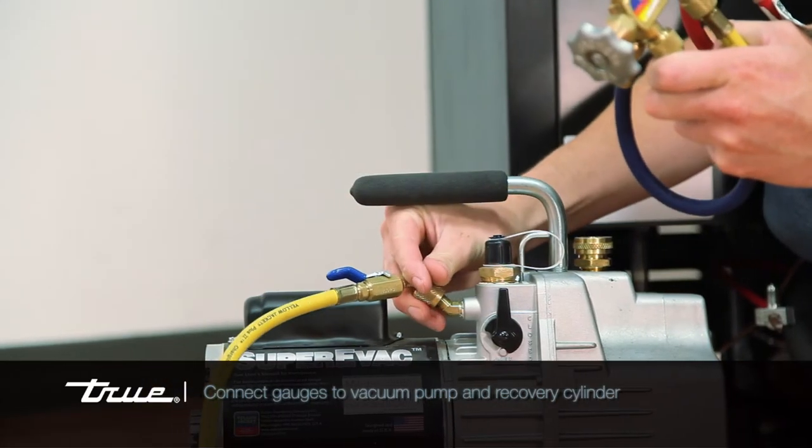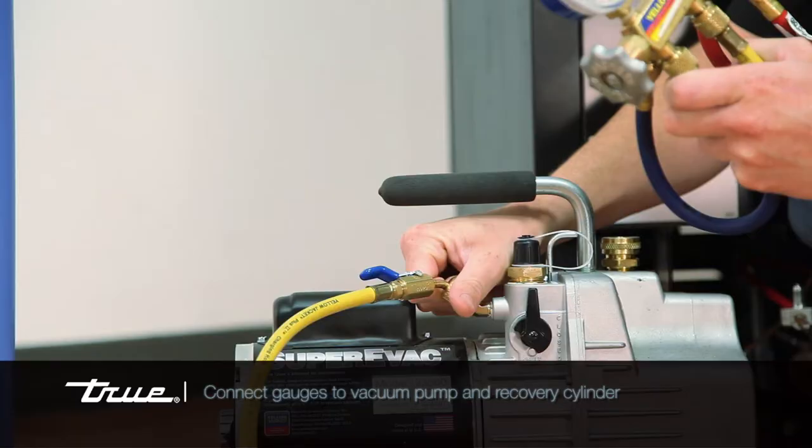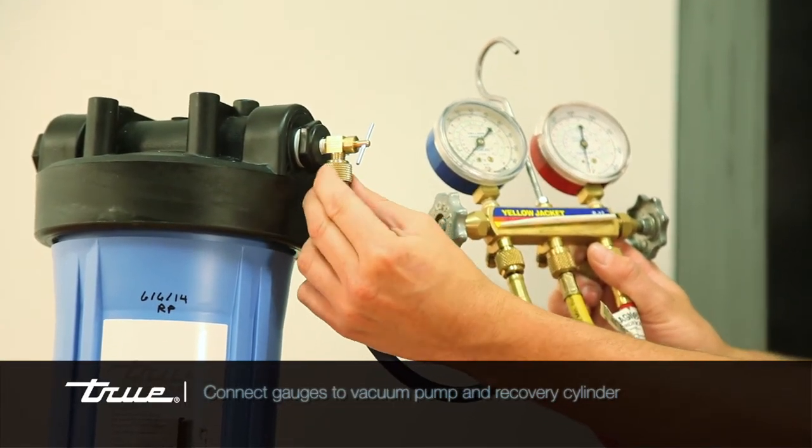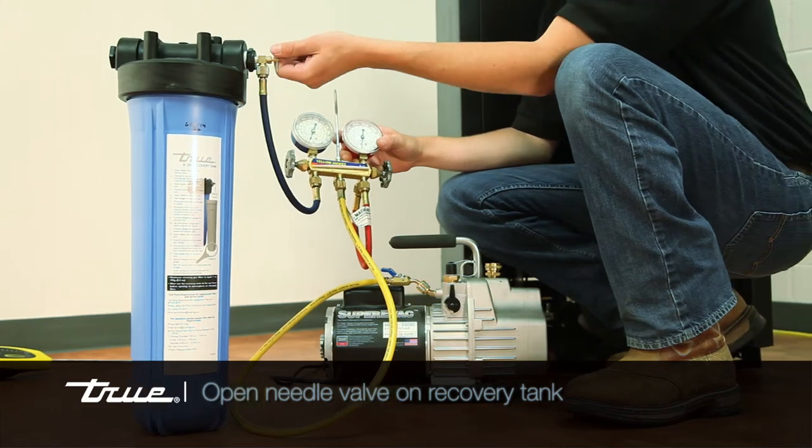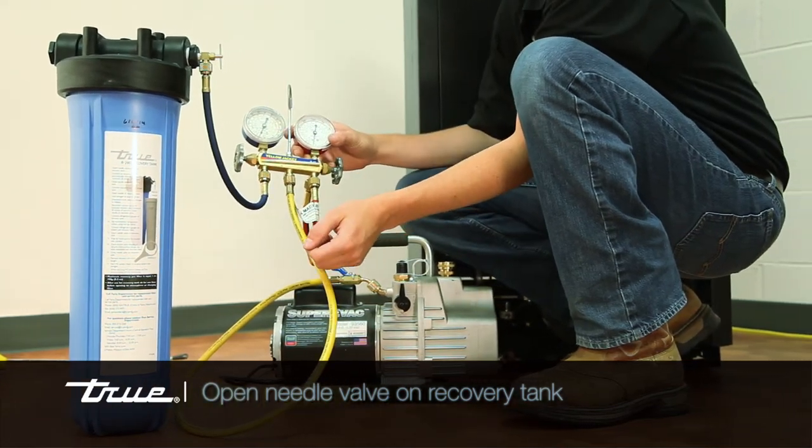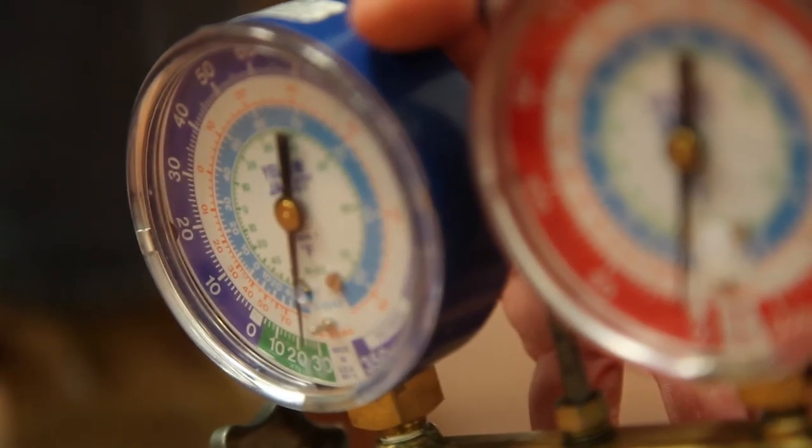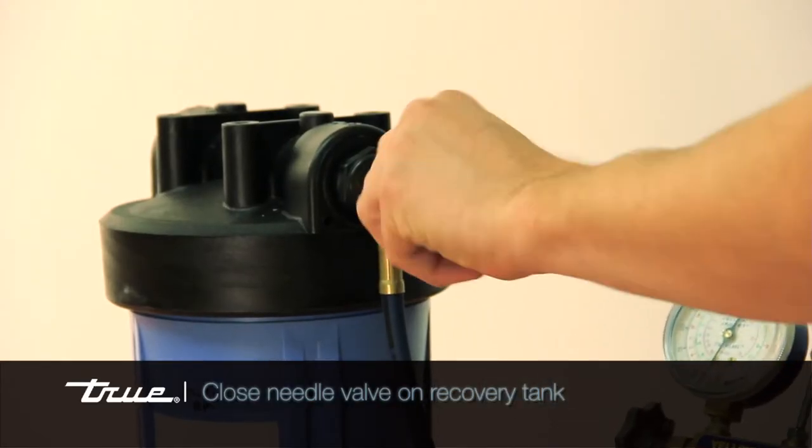Connect your refrigeration gauges to the vacuum pump and the recovery cylinder. Then open the needle valve on the top of the recovery tank and begin to evacuate the cylinder to a minimum of 25 inches of vacuum. Close the needle valve on the recovery tank.